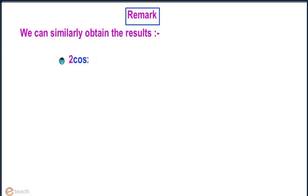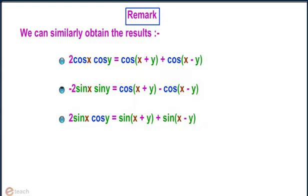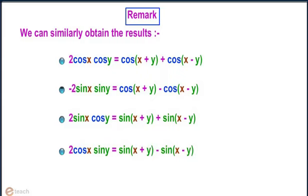2 cos x cos y equals cos(x+y) plus cos(x-y). Minus 2 sin x sin y equals cos(x+y) minus cos(x-y). 2 sin x cos y equals sin(x+y) plus sin(x-y). 2 cos x sin y equals sin(x+y) minus sin(x-y).